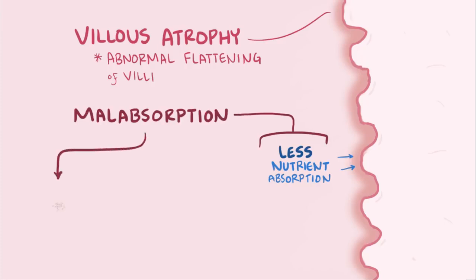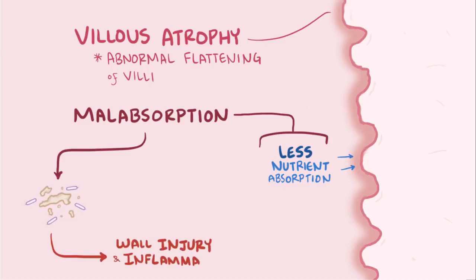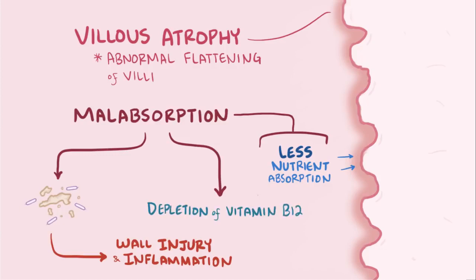First, more food is left behind for the bacteria, which leads to more intestinal wall injury and inflammation. Second, the malabsorption also causes depletion of vitamin B12 and folate over time. Unfortunately, folate is needed to help maintain the integrity of the intestinal mucosa, so as levels fall it also further contributes to the intestinal wall injury and inflammation.